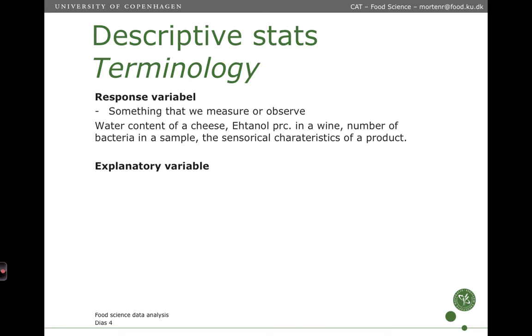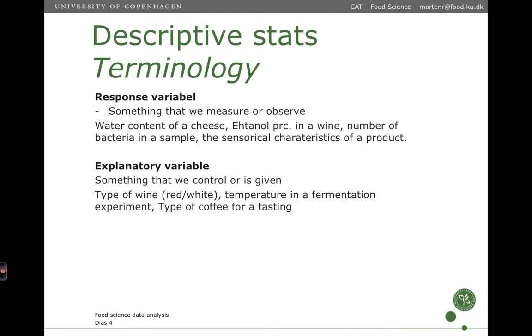An explanatory variable is of a different nature. It is something that we control or something that is given. So some examples is the type of wine that we look at, is it red, is it white? The temperature in a fermentation experiment, that is something that we control, we want to ferment a product at two different temperatures, 20 degrees and 24 degrees. So we control the temperature, so that is an explanatory variable, it is not something that we measure. Or for instance the type of coffee that we use in a tasting experiment, something from South America and something from Africa for instance.